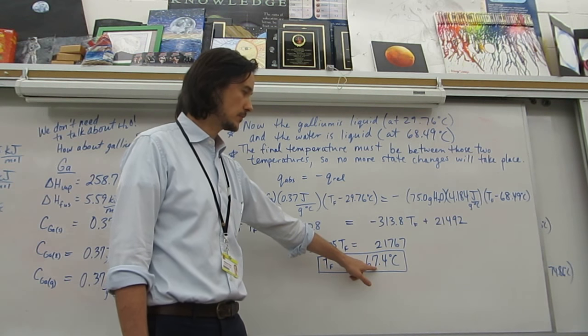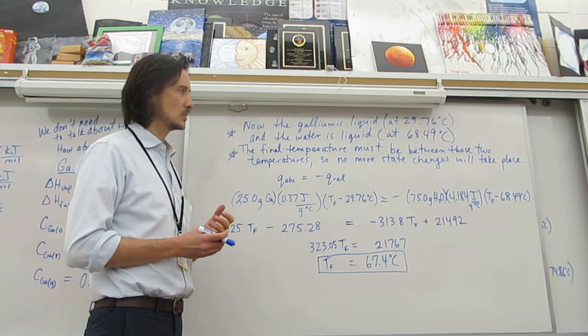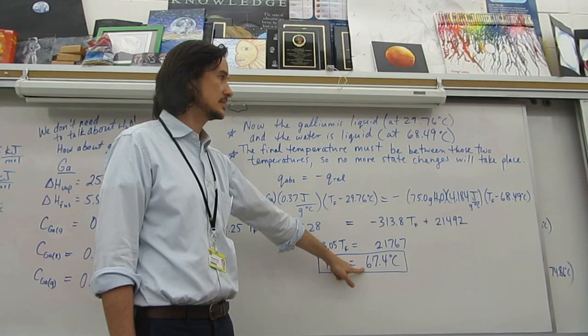So final temperature is 67.4 degrees Celsius. You might look at a problem like this and be like, oh, it can't be so close. Why is this one 30 and this one 68 but our final temperature is 67?